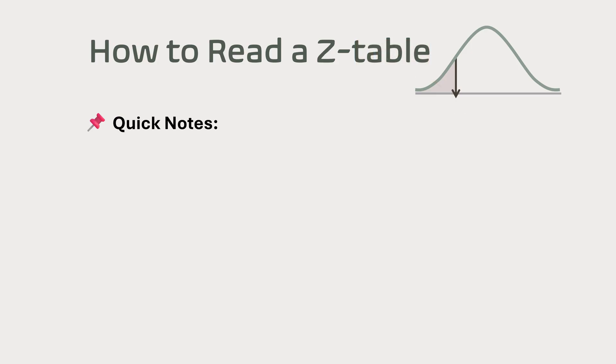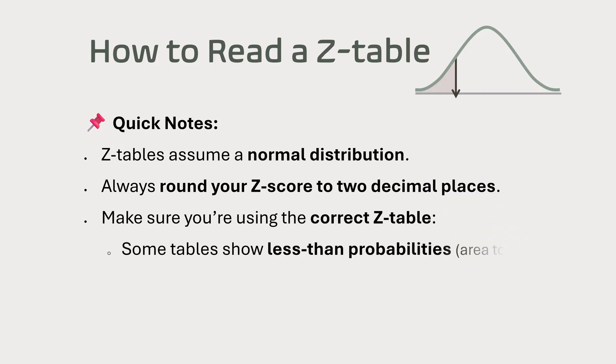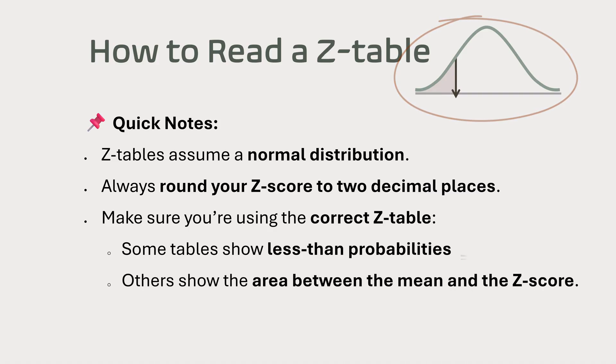Some quick notes. Z-tables assume you're working with a normal distribution. Always round your z-score correctly to two decimal places when using z-tables. Make sure you're using the correct z-table. Some tables show less than probabilities or area to the left, while others show area between the mean and the z-score.